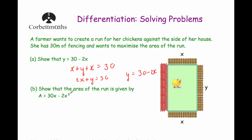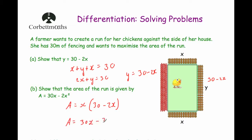Part B says show the area of the run is given by A equals 30X subtract 2X squared. The area of the rectangle is the length times the width. We know Y equals 30 subtract 2X, so the area equals X times (30 subtract 2X). Expanding the brackets, we get A equals 30X subtract 2X squared, which is what we were asked to show.